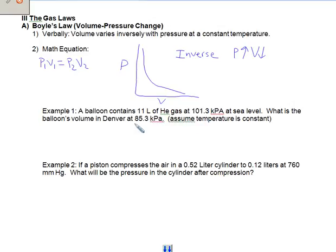So what you need to do here is make sure that you match up your variables. We have 11 liters at 101.3 kPa. So our P1 is 101.3 kPa. Our V1 is 11 liters. What is the balloon's volume? We're looking for V2, so let's put a question mark there.